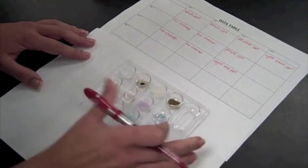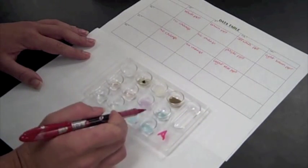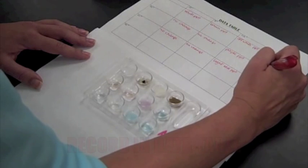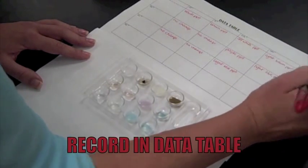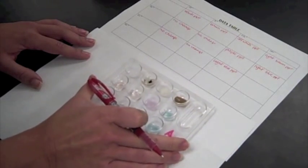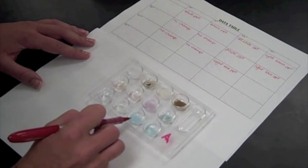And on the cobalt, it's a pretty light blue precipitate. And on the copper,